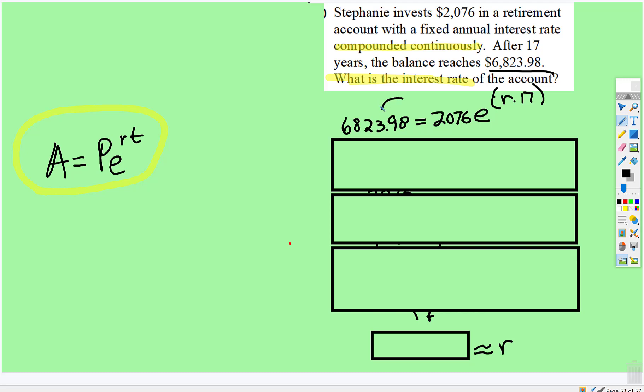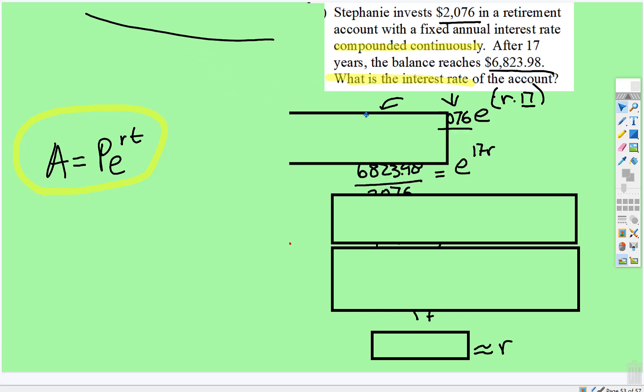So this is solved exactly like the last one. We're going to divide both sides by the principal because that's attached by multiplication, so we're going to do the inverse operation.